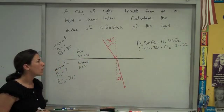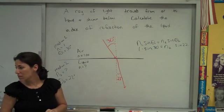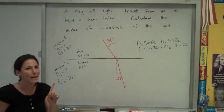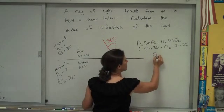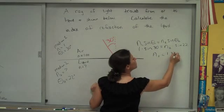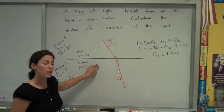And since your angles are given in degrees, you're going to want to make sure that your calculator is in degree mode. You should get 1.335 as the n value for the second medium, for this liquid.